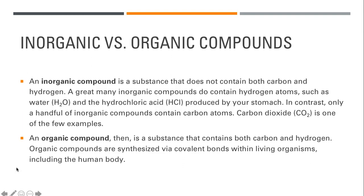In general, when we talk about compounds, we can classify them into one of two categories: organic and inorganic. An inorganic compound is defined as a substance that does not contain both carbon and hydrogen. I want to make that distinction. This is talking about compounds that don't contain both carbon and hydrogen at the same time. A lot of inorganic compounds will contain hydrogen atoms, such as water (H2O) and the hydrochloric acid (HCl) produced by your stomach, but it won't have carbon and hydrogen with it as well. Sometimes you might find inorganic compounds that do contain carbon, although they're much rarer. A big one that I can give you is carbon dioxide, CO2. It's inorganic, has carbon, but you notice that it doesn't also have hydrogen with it. An organic compound, then, is a substance that contains both carbon and hydrogen at the same time. Organic compounds are synthesized via covalent bonds - those are the bonds that equally share electrons rather than ionic bonds - within living organisms, including us.